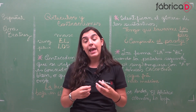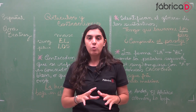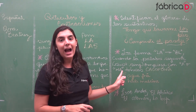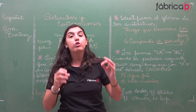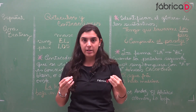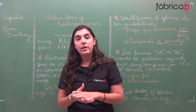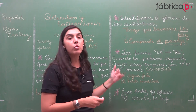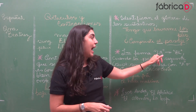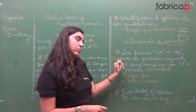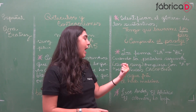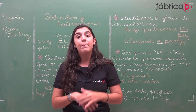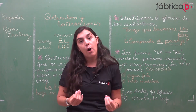Como eu consigo ver que é um caso de cacofonia? Quando a palavra começar por 'a' ou 'ha' tônicas — tem que ser tônicas. Se começa com 'a' ou 'ha' tônicas, o artigo muda: no caso do feminino singular, o 'la' vira 'el'. Ou seja, a palavra seguinte, substantivo singular, começa com 'a' ou 'ha' tônico, que é a primeira sílaba, a sílaba forte.